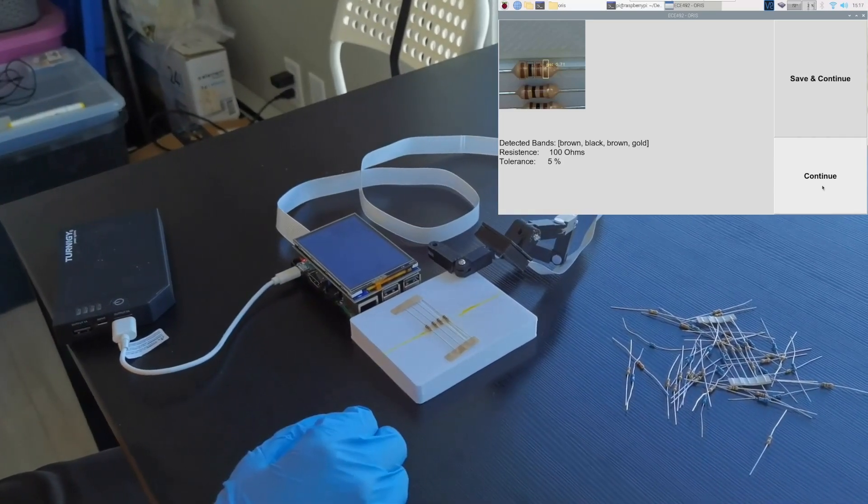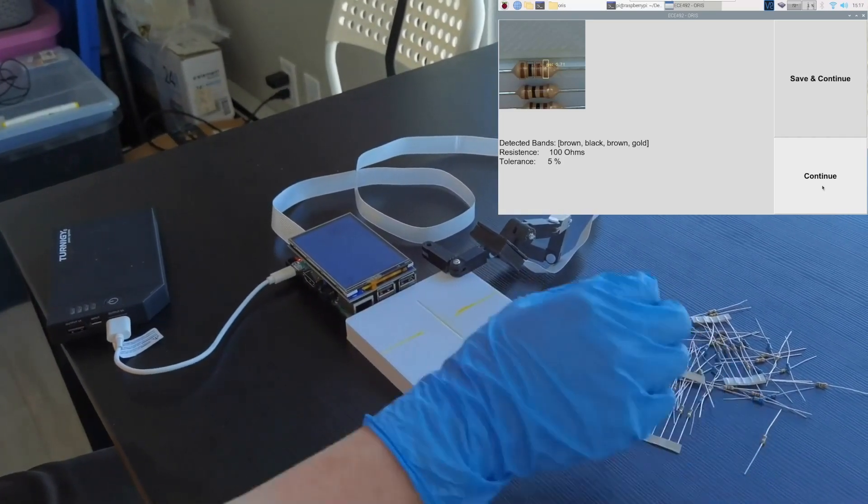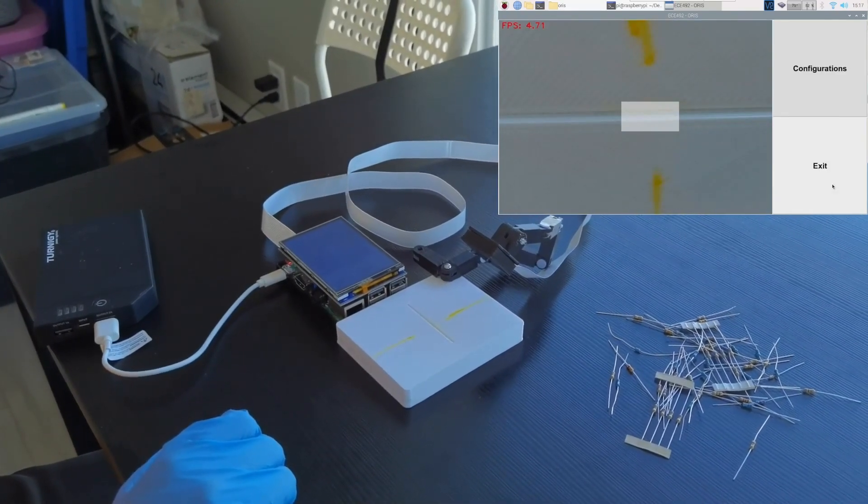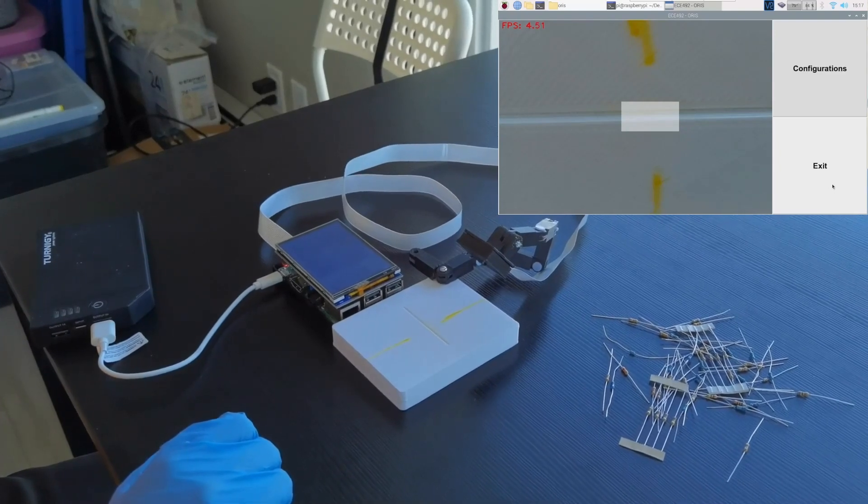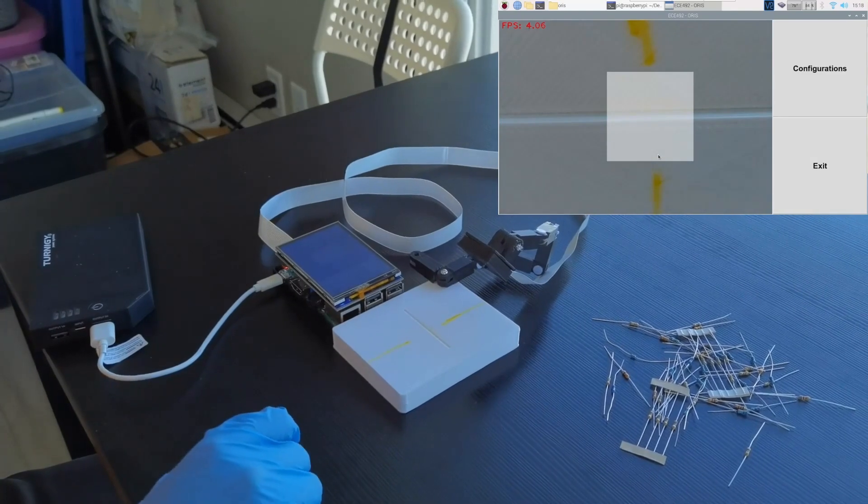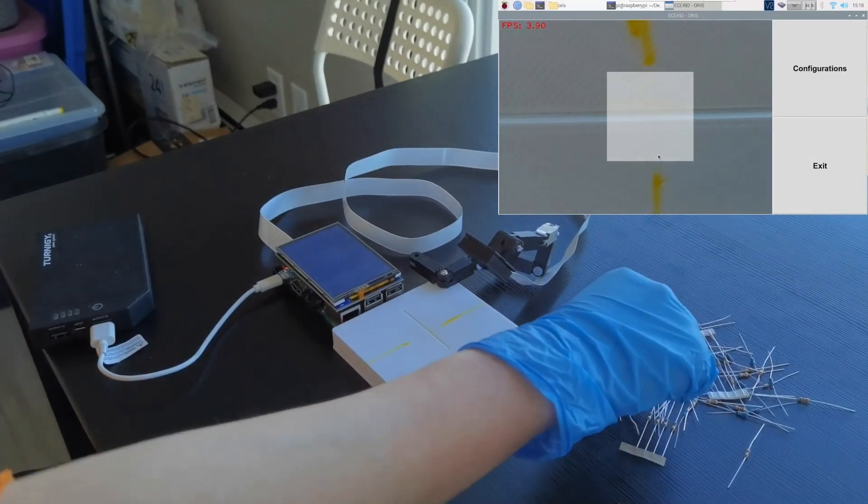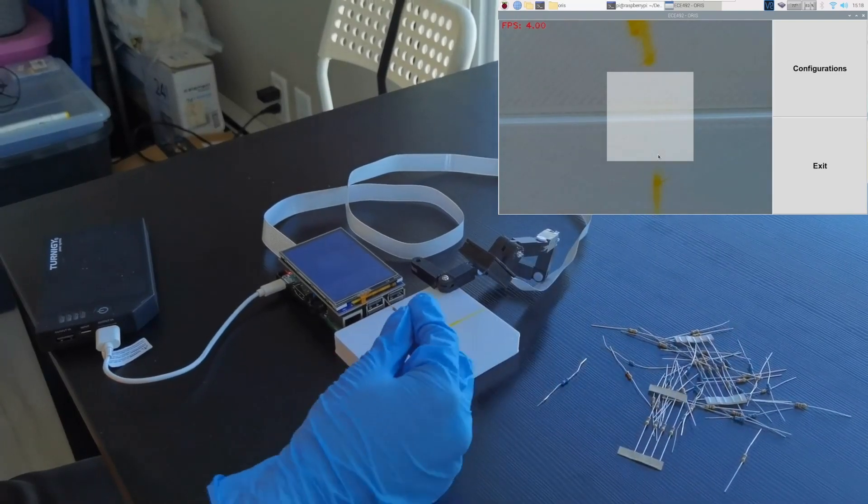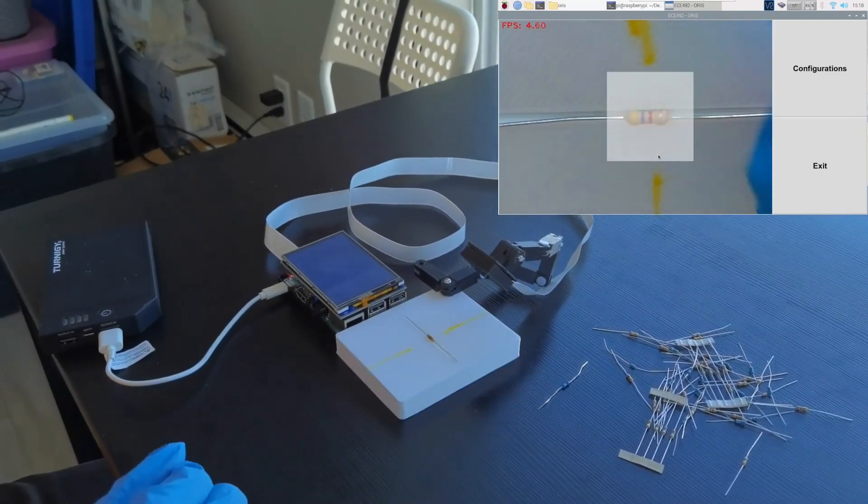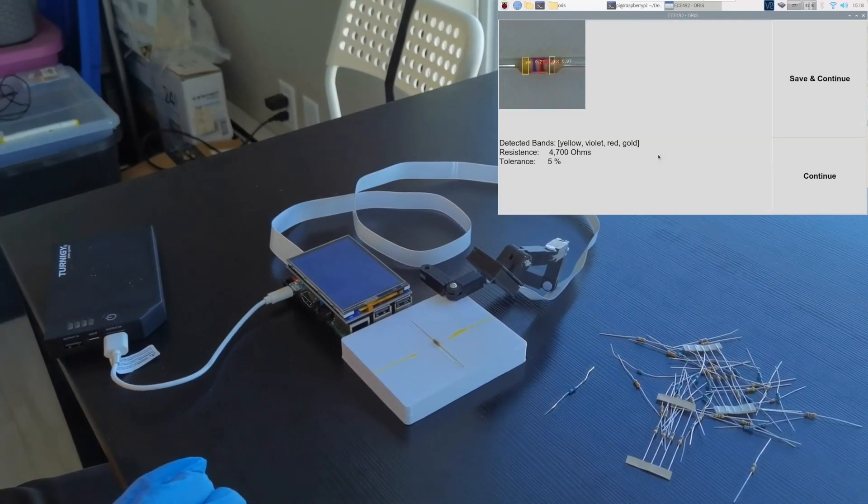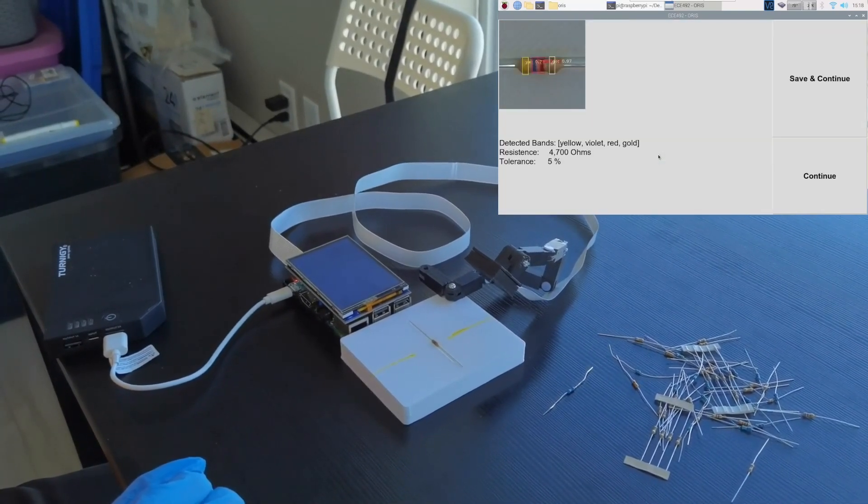Currently, we have only demoed the ORIS in its focus mode with this tiny field of view, but in case we want to have more freedom placing the resistor on the platform, we can change it into normal mode by a tap on the screen. This allows us to easily scan a single resistor. Next, Shen Wei will demonstrate additional functionalities of the ORIS to you.